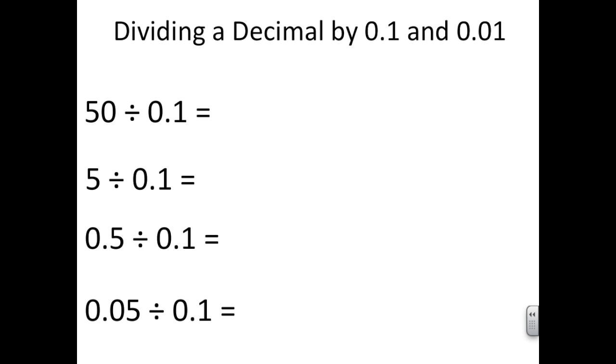We can write 50 divided by 0.1 as a fraction since the fraction line means divided by. This is another way to show division. But before we can solve, we need to fix something. There's a problem. We have a decimal as the divisor, which when written as a fraction is our denominator. We need to make our denominator a whole number.